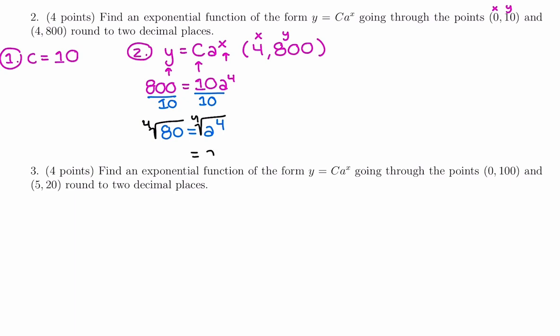Which means on my graphing calculator, I'm going to use math number five. Math number five allows me to take any number root I want. I want the fourth root of 80, and I'm going to round to two decimal places. So I'm going to get 2.99.